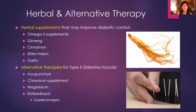Here are some herbal and alternative therapies. Herbal supplements that may improve diabetic control include omega-3 supplements, ginseng, cinnamon, bitter melon, and garlic, as these may increase insulin production in the pancreas. Alternative therapies for type 2 diabetes include acupuncture, chromium supplements, magnesium, and biofeedback — such as guided imagery — which is assumed to be very stress-relieving. It is thought that reducing stress may help the pancreas synthesize more insulin and help control blood glucose levels.